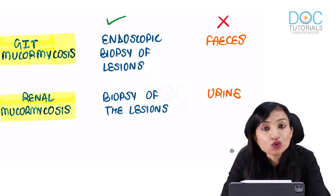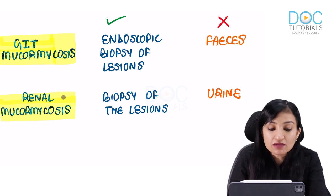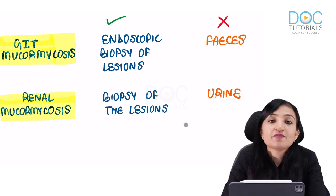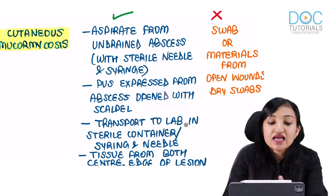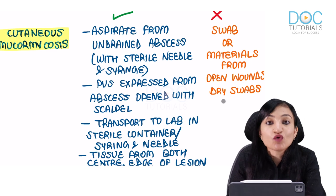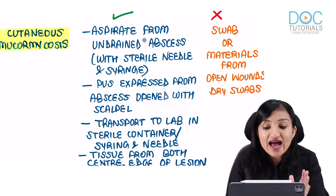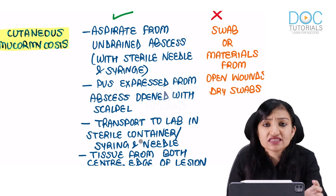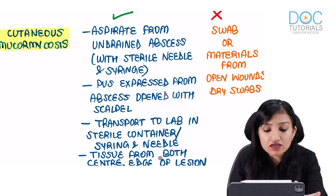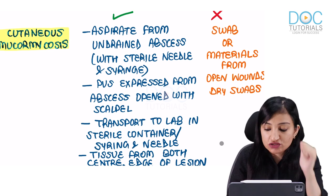In GIT Mucormycosis, do not collect feces; collect endoscopic biopsy of the lesions. In renal Mucormycosis, contrary to expectation, do not collect urine — go for biopsy of the lesions. In cutaneous Mucormycosis, avoid dry swabs or material from open wounds; instead aspirate from undrained abscesses or pus expressed from abscesses opened with a scalpel, transported in sterile containers. Importantly, tissue should be collected from both the center and the edge of the lesion.